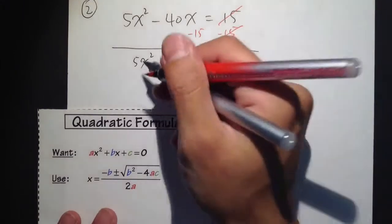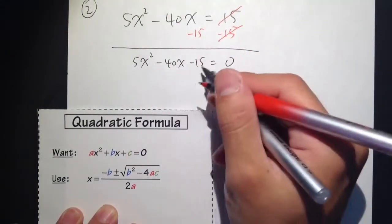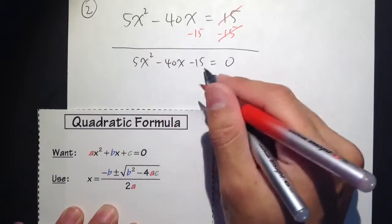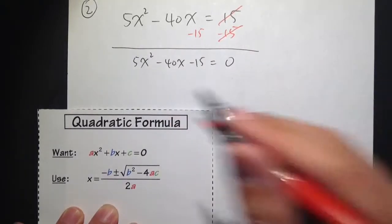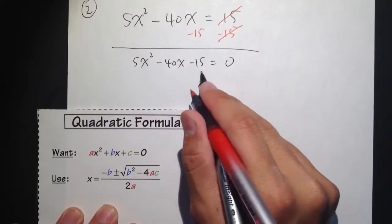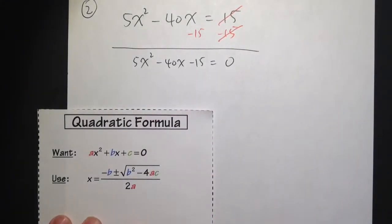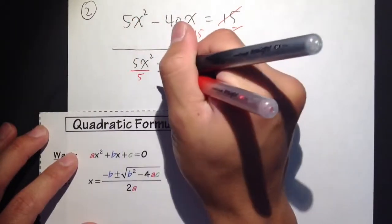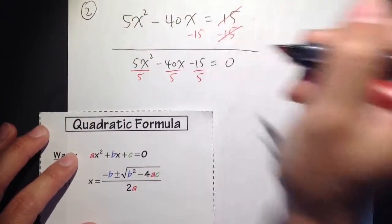Then I see I will have 5x² - 40x - 15 = 0. So now we can technically use the quadratic formula already. That's the a and b is negative 40 and c is negative 15. But then I notice that 5, 40, and 15, all these numbers are divisible by 5. So why not?